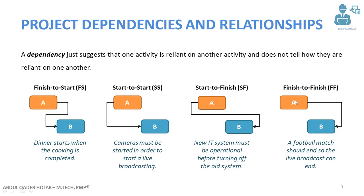The last type of relationship is Finish-to-Finish, where the predecessor activity must finish in order to consider the successor activity as completed. For example, a football match should end so the live broadcast can end — as long as the match continues, the live broadcasting continues.